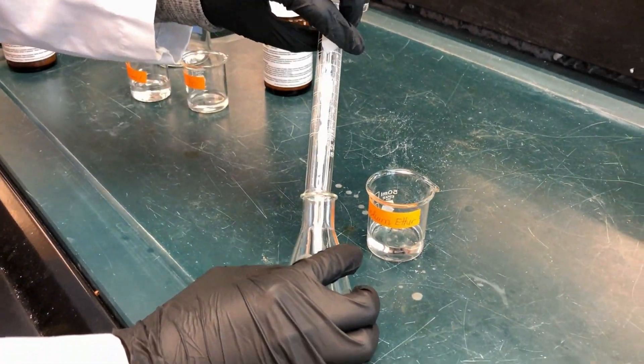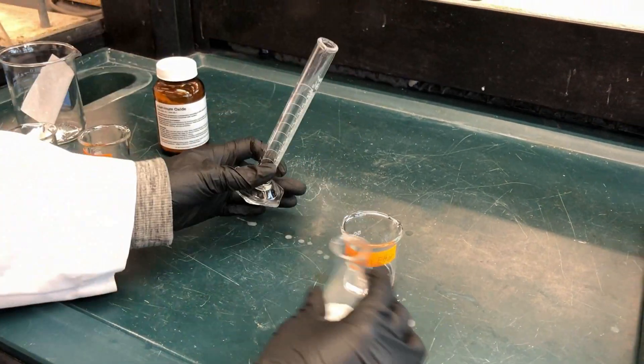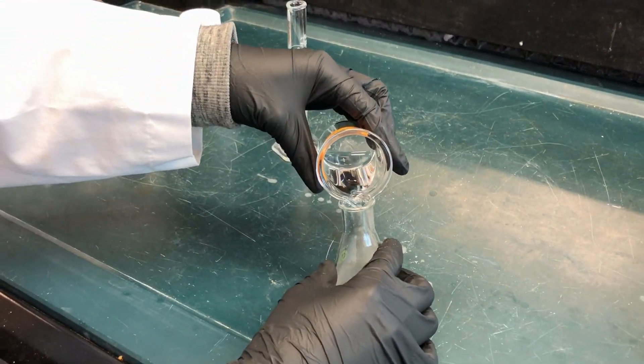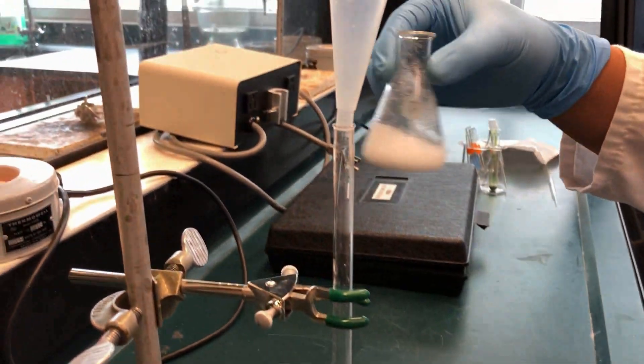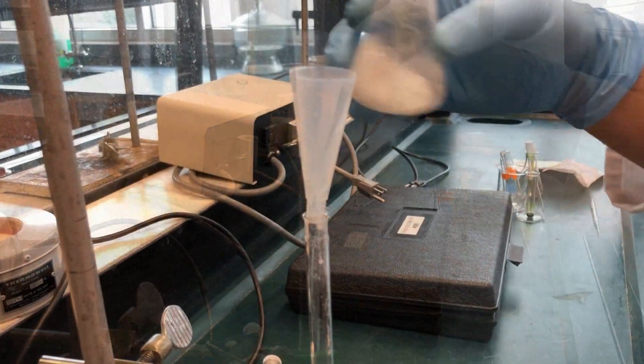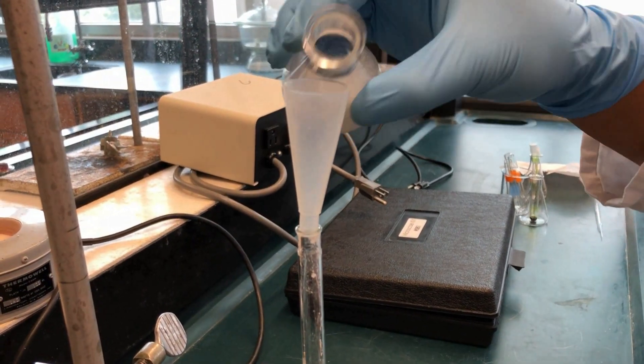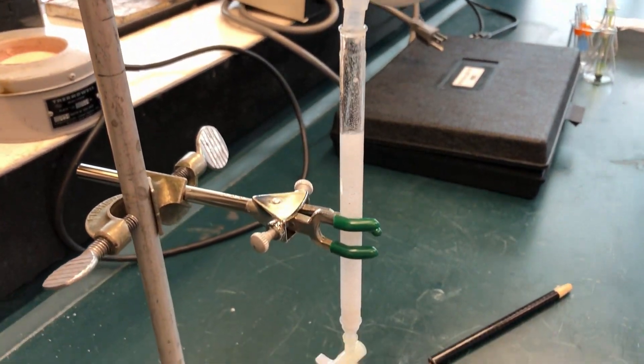Transfer the alumina into a flask. Add petroleum ether and mix. In order to successfully prepare your alumina in the column, pour it into the column while mixing so the solid does not settle to the bottom of the flask.